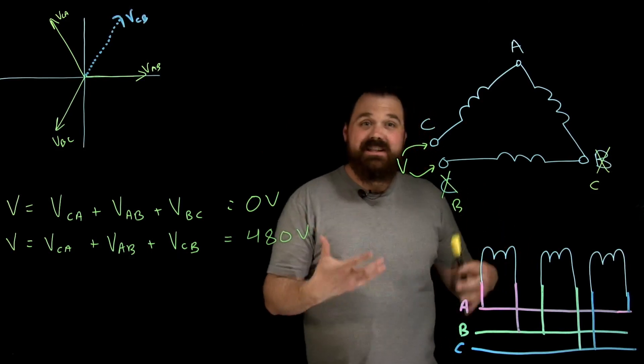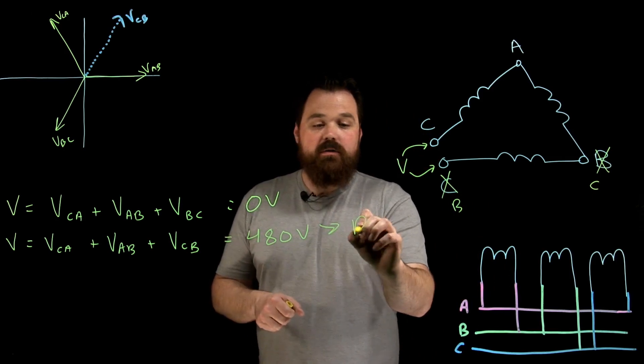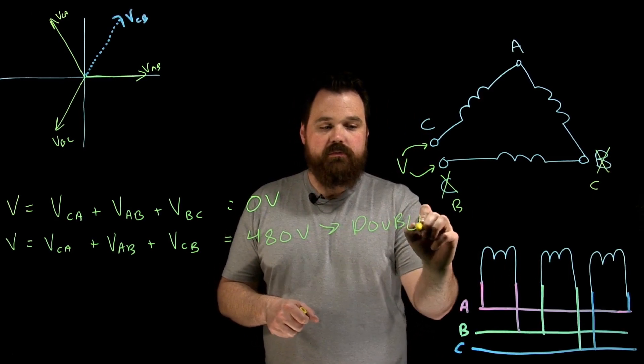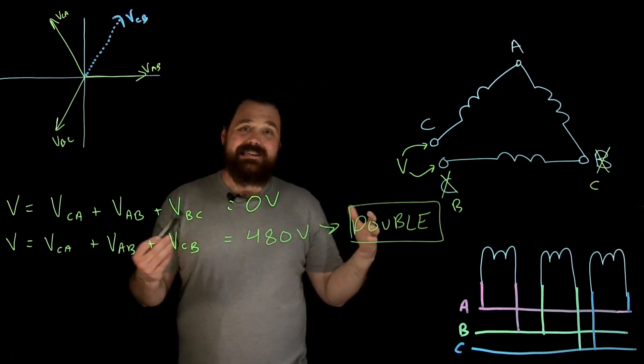Now, that's consistent throughout. If I do it incorrectly, I'm gonna get double the voltage on an incorrectly connected delta connection.